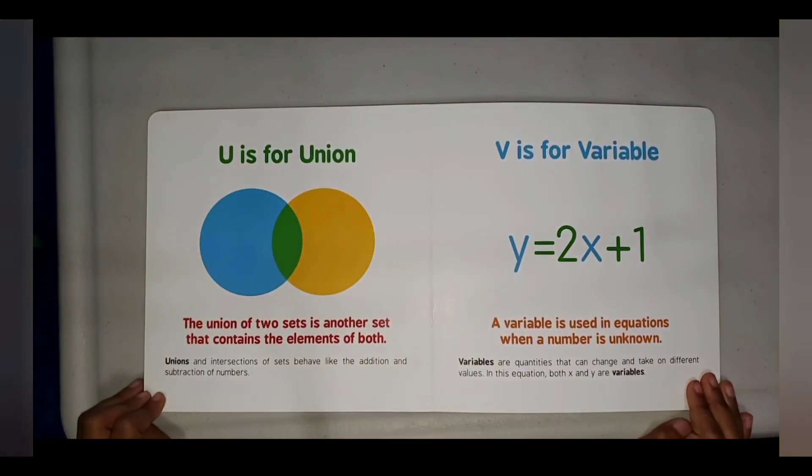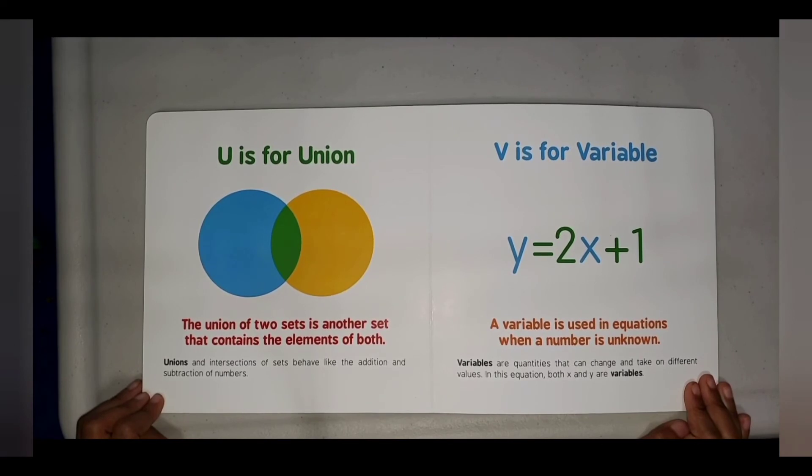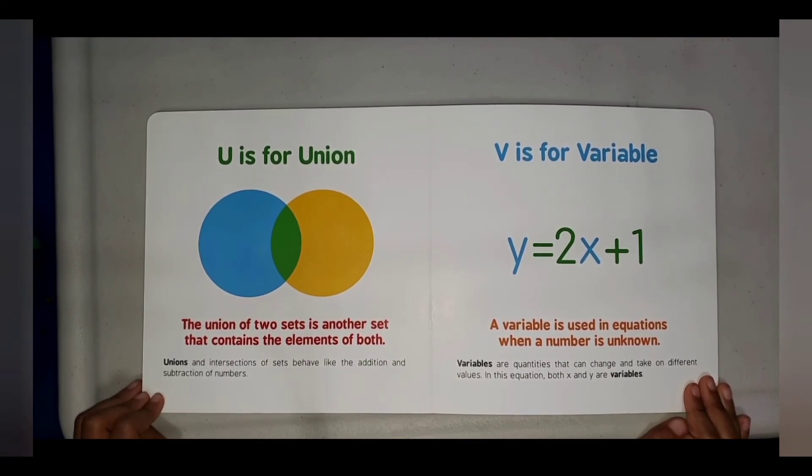U is for Union. The union of two sets is another set that contains the elements of both. Unions and intersections of sets behave like the addition and subtraction of numbers.